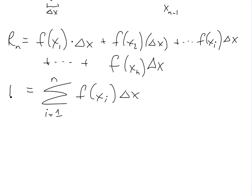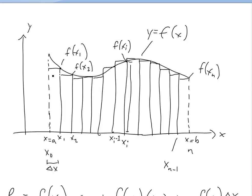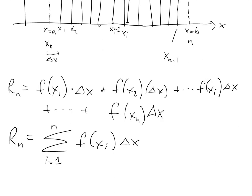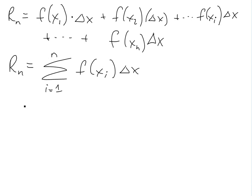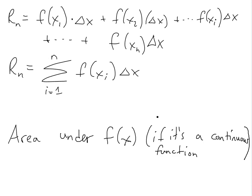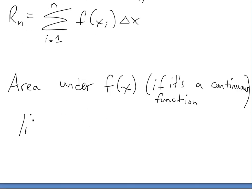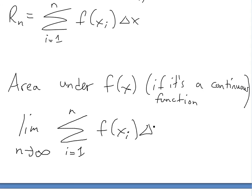Like I showed in my earlier video, the limit as you go to basically an infinite number of rectangles, you're going to get the area. So basically, the area is defined as: if f(x) is continuous, then the area is defined as the limit as n, the number of rectangles, goes to infinity of the sigma from i equals 1 to n of f(xi) times delta x.